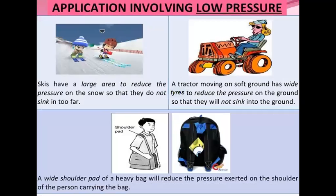Now let's study some applications involving low pressure. First, skis have a large area, which reduces the pressure on the snow so that they do not sink in too far — that is why a person is able to ski on snow very easily. Second, a tractor moving on soft ground has wide tires to reduce the pressure on the ground so that they will not sink into it.